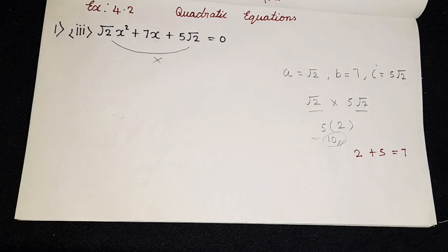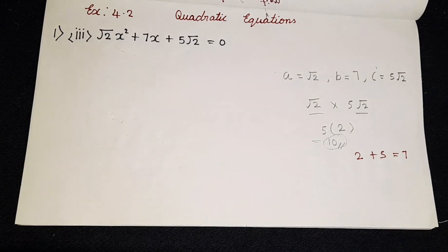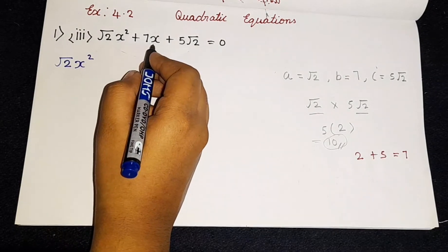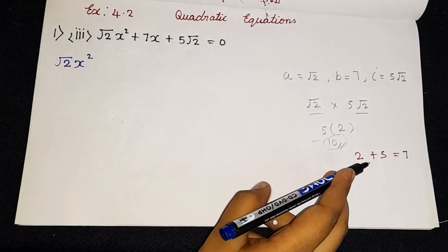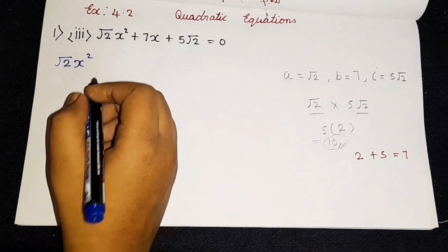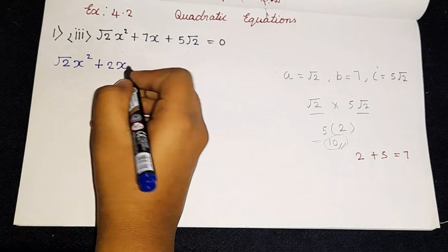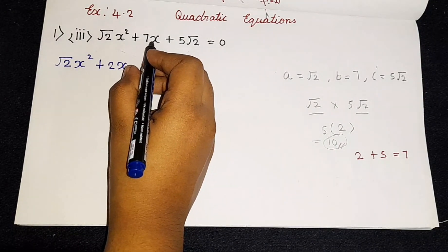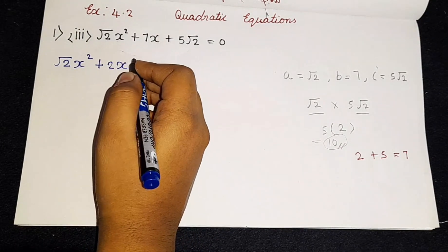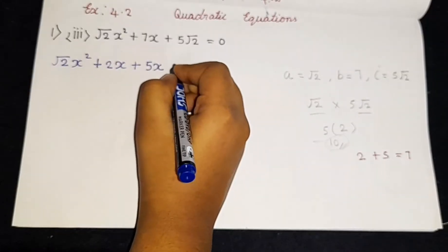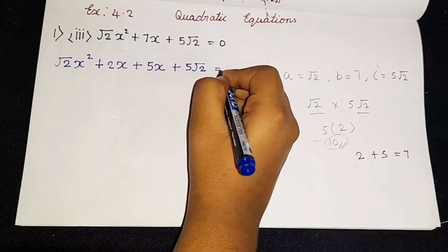So now we can write root 2 x squared as it is — that is the first term. Then instead of plus 7x I told you guys we are going to write 2 plus 5, with the x variable — it is really important. Since 2 plus 5 is 7, this x belongs to both 2 and 5. So it becomes: root 2 x squared plus 2x plus 5x plus 5 root 2, is equal to 0.